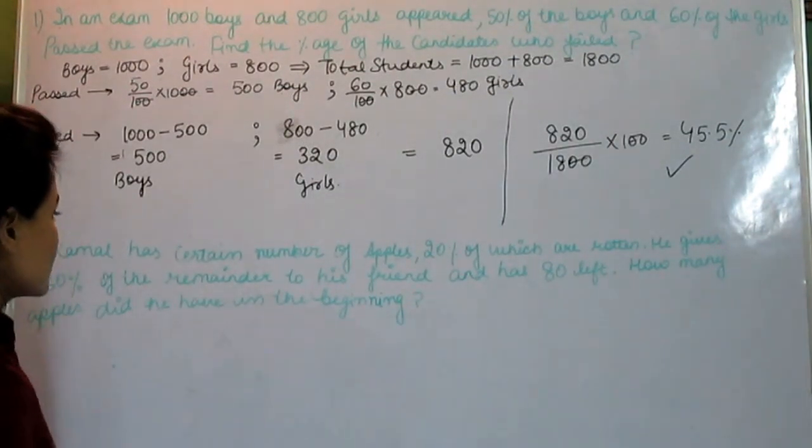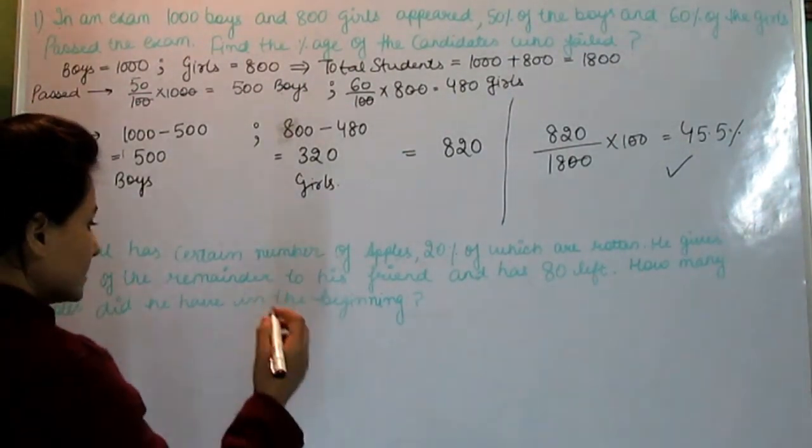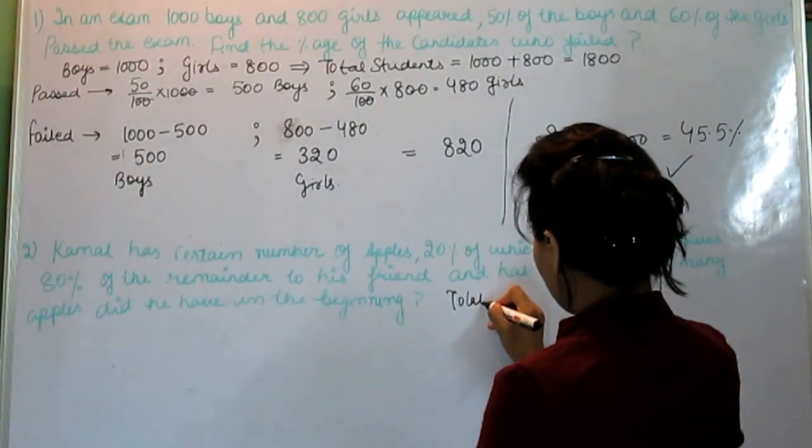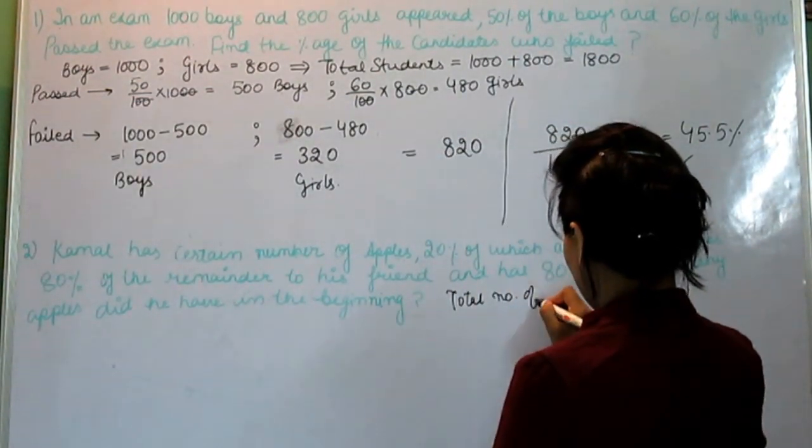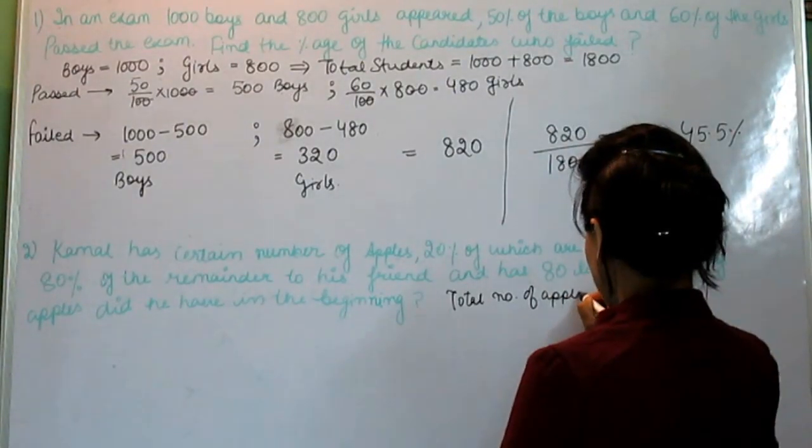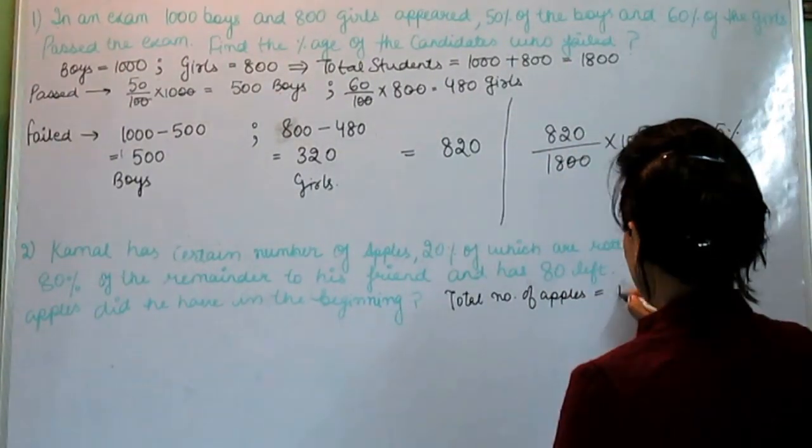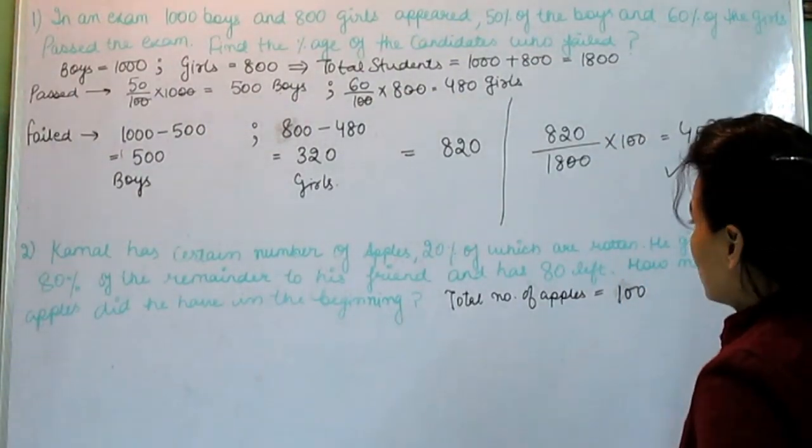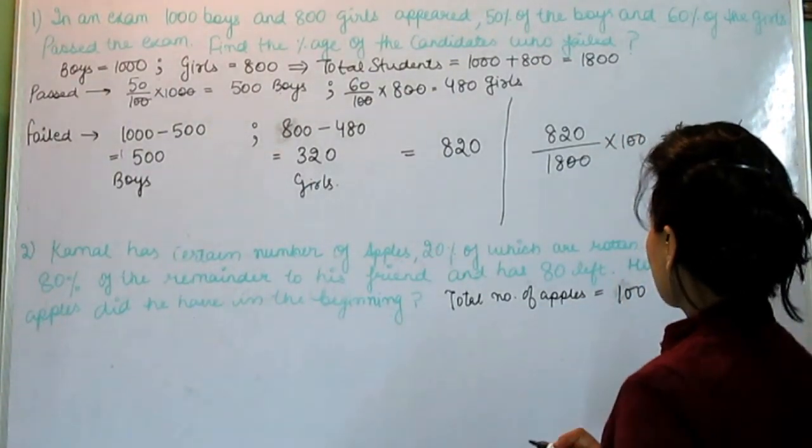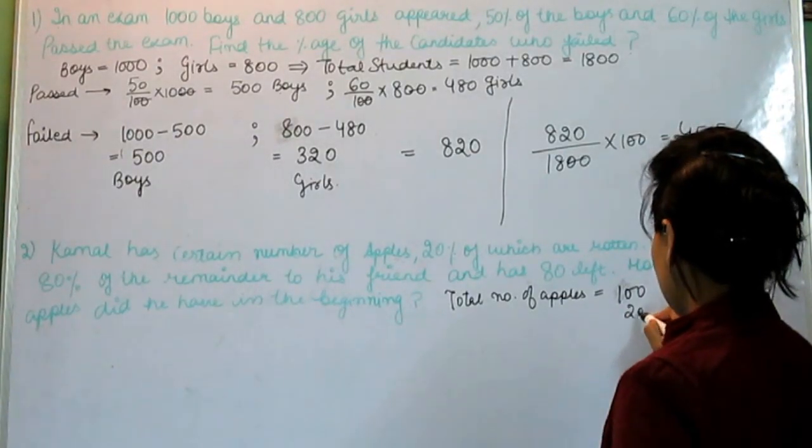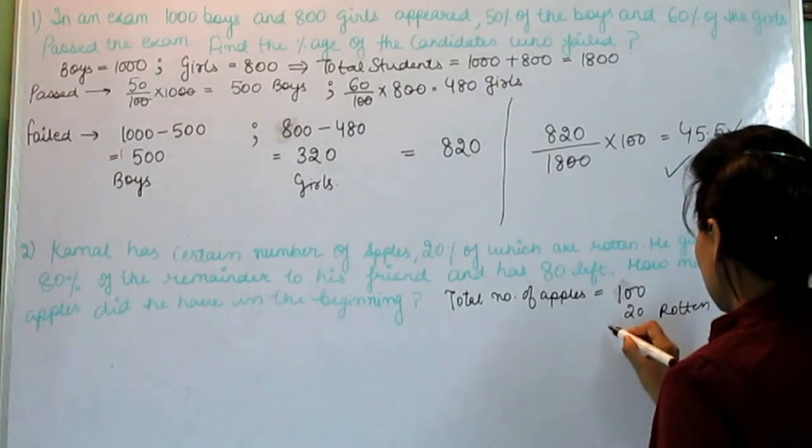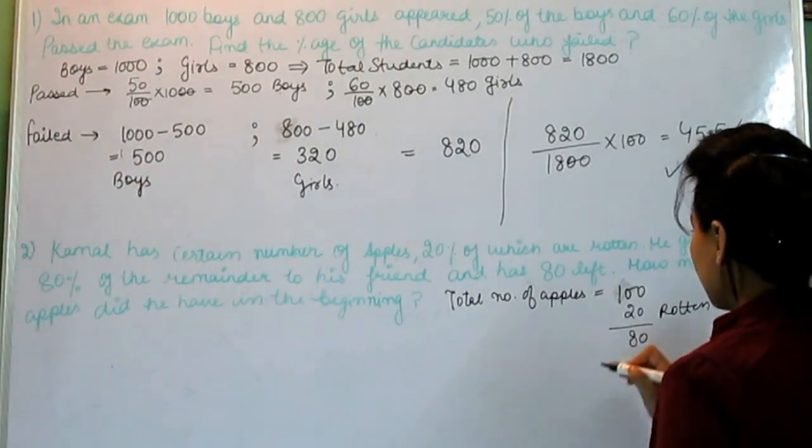Kamal has a certain number of apples. Let's suppose total number of apples is equal to 100. From which 20% are rotten, it means 80 are left.